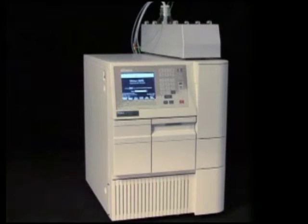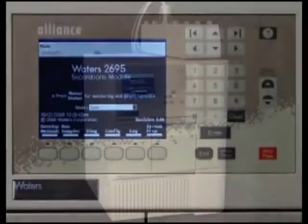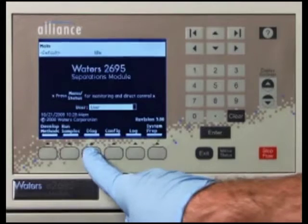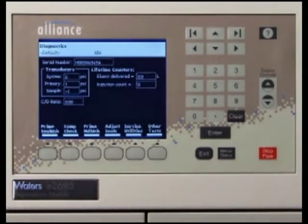Before performing this procedure, ensure that the gradient proportioning valve is turned off to prevent siphoning of mobile phase. To do this, press the Diagnostics key from the 2695 main screen.